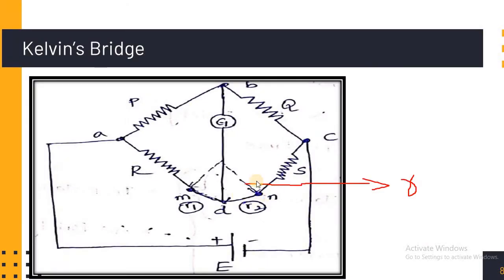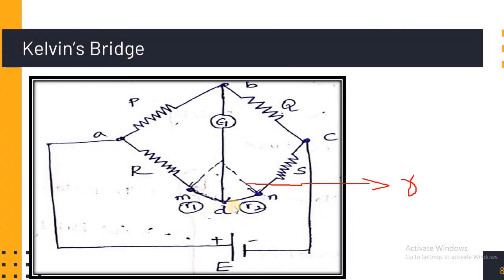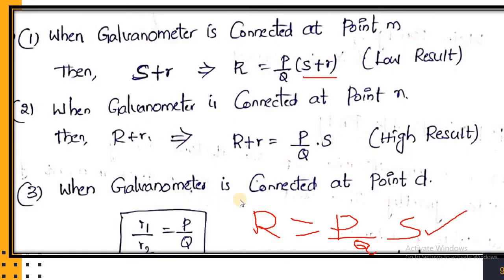Similarly, when the galvanometer is connected at point M, we also have to consider the opposite resistance — that means r plus small-r, where small-r is the internal resistance of the connecting lead. In place of R we substitute R plus small-r, giving R + r = (P/Q) × S. This gives a high result value, while the previous gave a low result value, so we need to consider the medium result — which is obtained at point D.